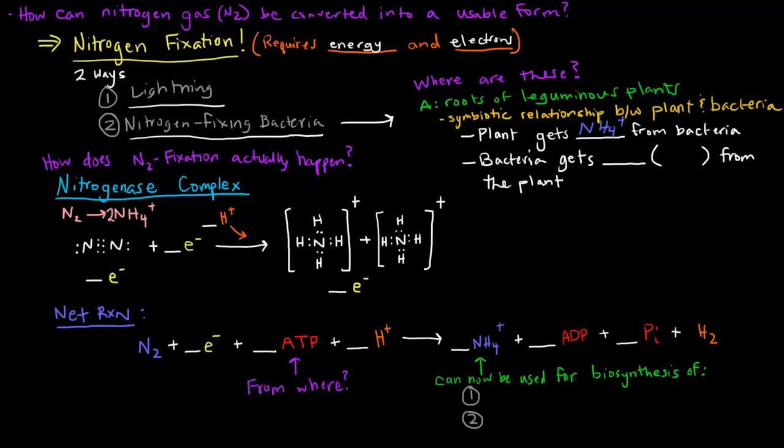The bacteria, what they get is they get ATP, which provides energy for the production of the usable nitrogen, because this process is highly endergonic and requires energy. So the bacteria gets ATP from the plant, and then the plant benefits in that it gets the ammonium from the bacteria. They both benefit from this relationship.